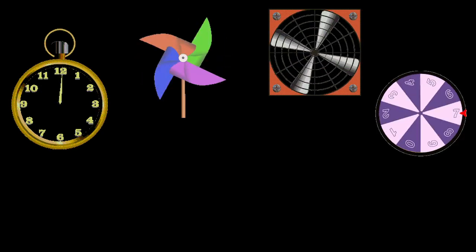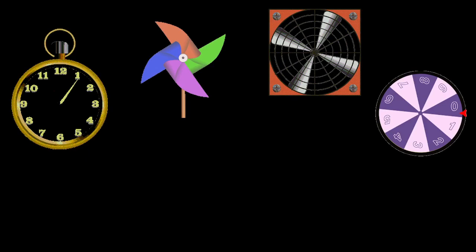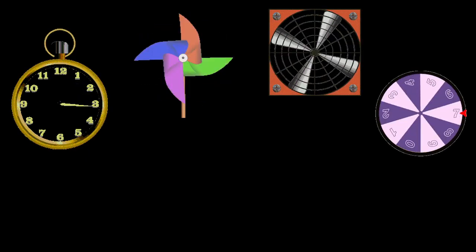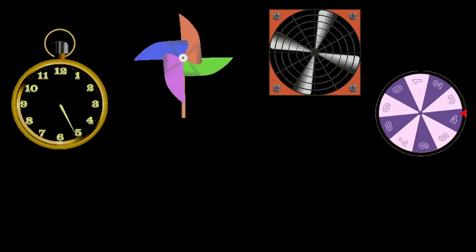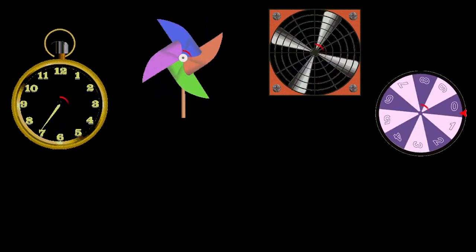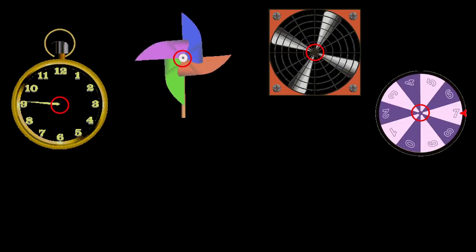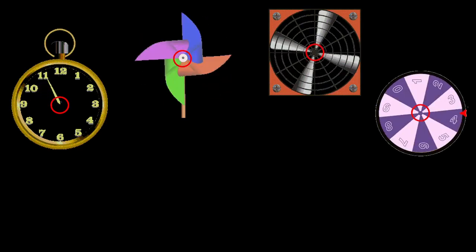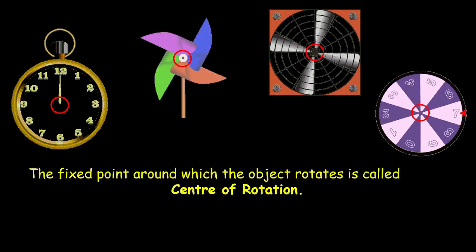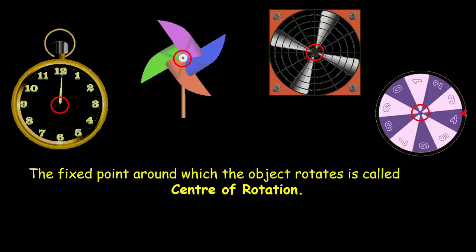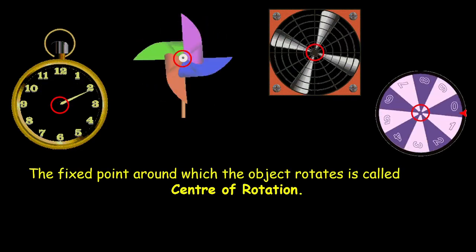Look around yourself. You will see multiple rotating objects — the hands of a clock, the blades of a fan, a pinball or a spinning dartboard. Do you observe one thing which is common in all of these? There is one point which is not rotating. It is fixed. Such a fixed point around which the object rotates is called the center of rotation.